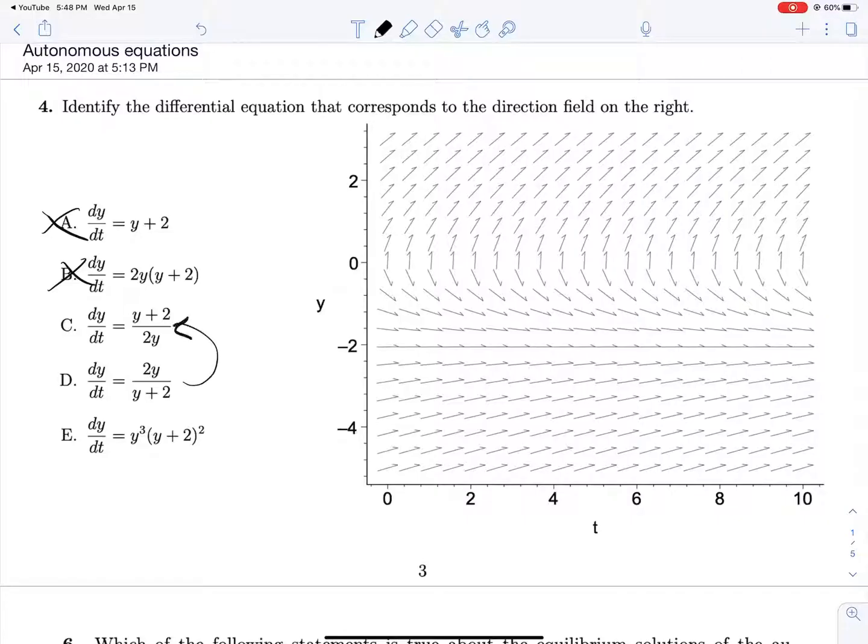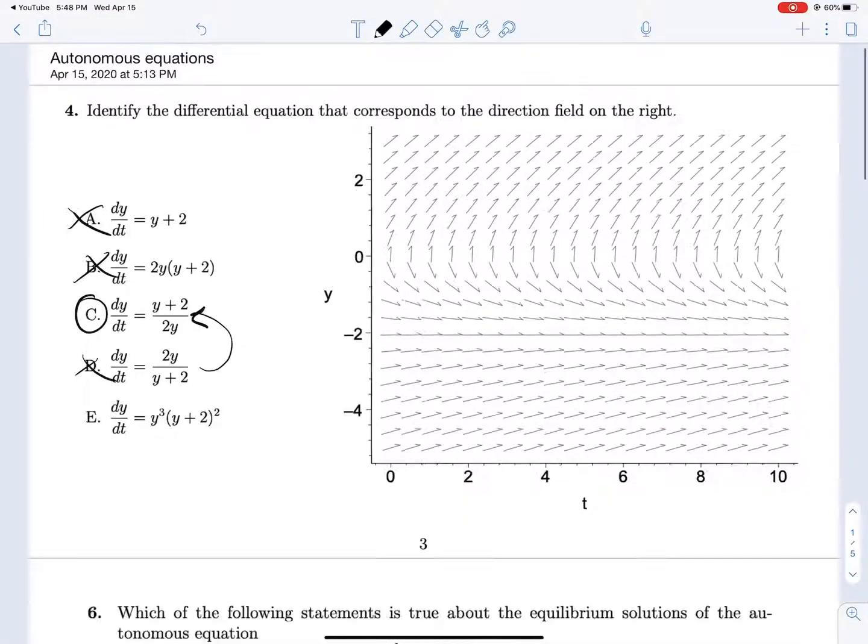And so that should lead us back to option C, which is the inverse, right? So we have y plus 2 on top. If we plug in y equals negative 2, we will get 0 over negative 2, which is good there. And then if we plug in y equals 0, we will get a discontinuity because we'll have a division by 0. And so C is our answer.